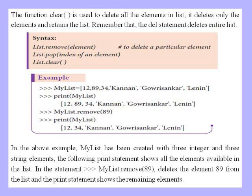The syntax is: list.remove(element), list.pop(index), list.clear(). Here is an example: mylist = [12, 89, 34, 'Kannan', 'Gaurishankar', 'Lenin']. Using mylist.remove(89) deletes the element 89 from the list. The following print statement shows the remaining elements after removal.